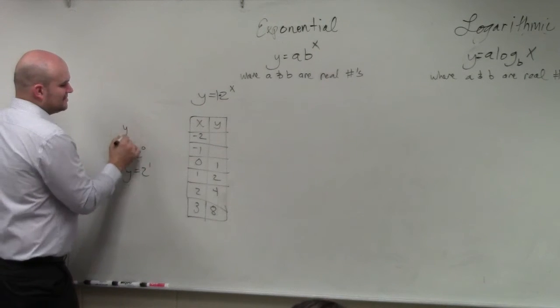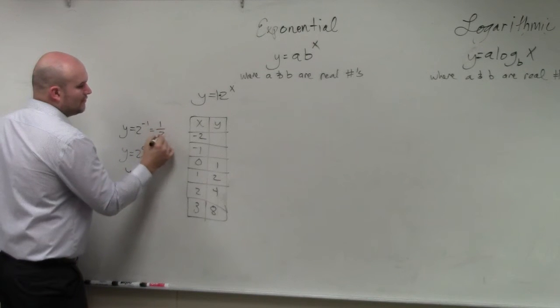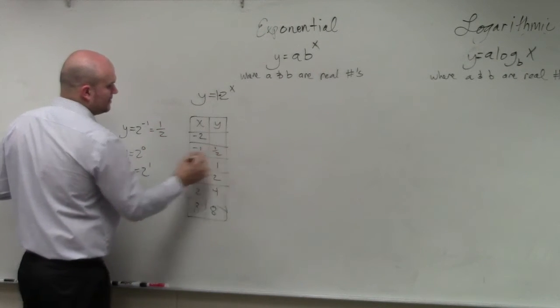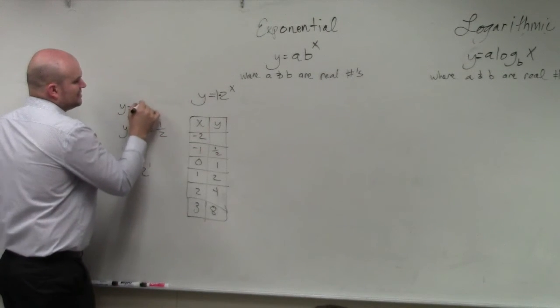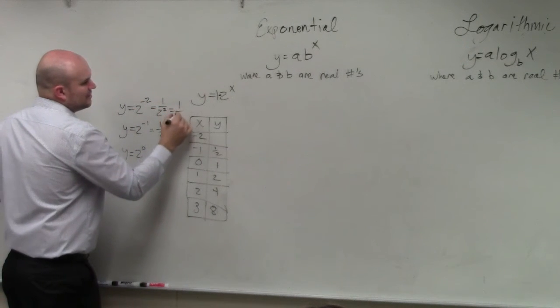The negatives sometimes trip people up. Y equals 2 to the negative first is 1 over 2, so that's 1 half. And y equals 2 to the negative second is 1 over 2 squared, which equals 1 fourth.